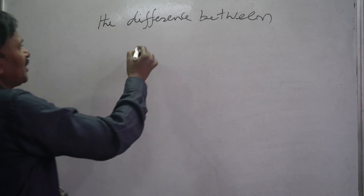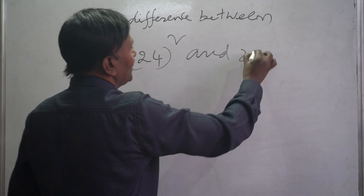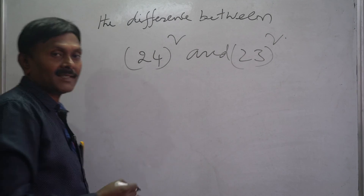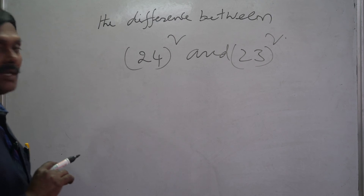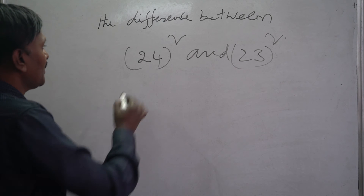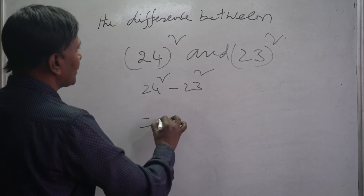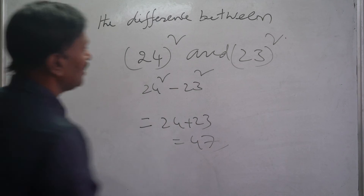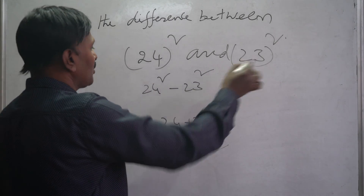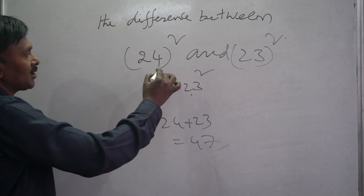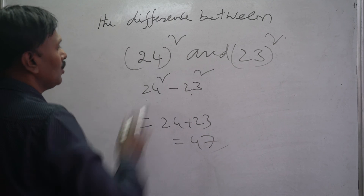One more example: the difference between 24 square and 23 square. We already discussed that the difference between the squares of two consecutive numbers equals the sum of those two consecutive numbers. So instead of calculating 24 square or 23 square, you can directly add 24 plus 23, which equals 47. That is the answer.